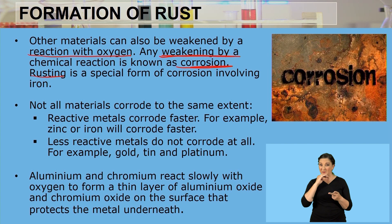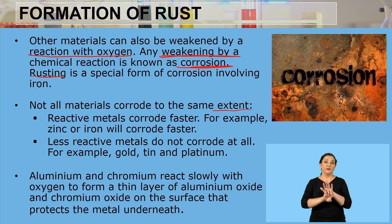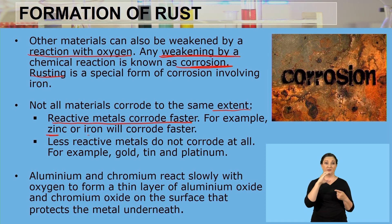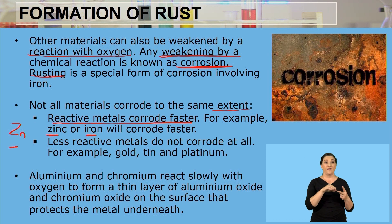Not all materials corrode to the same extent. Reactive metals corrode faster — for instance, zinc (Zn) and iron (Fe). Zinc has the chemical symbol capital Z, small n, and iron has the chemical symbol capital F, small e. These two substances are going to corrode faster.